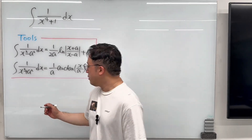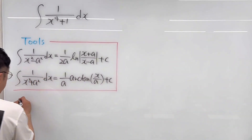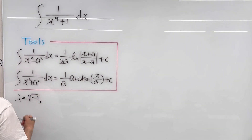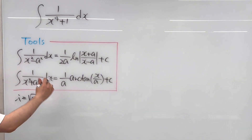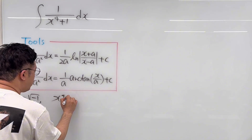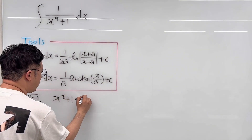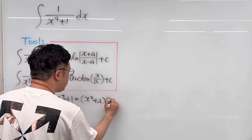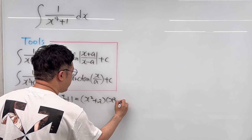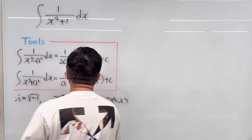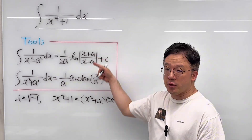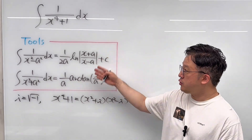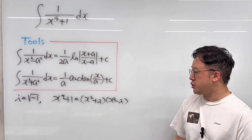Knowing that i is the square root of negative 1, x to the power of 4 plus 1 can be factored as (x² + i)(x² − i). I'll list up two tools that I'll be using to evaluate this using complex solutions.